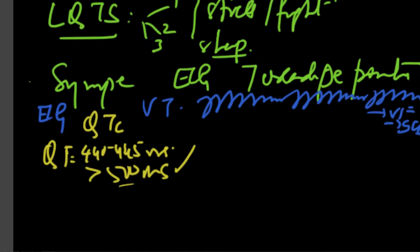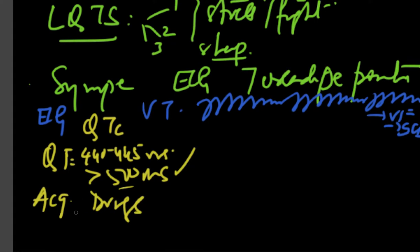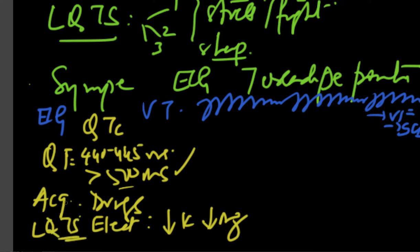These are congenital varieties. Then you have an acquired variety. Acquired variety results from drugs, medications, and then it also results from electrolyte abnormalities. What are the classic electrolyte abnormalities? It's a low potassium and a low magnesium. Either of these two, hypomagnesemia or hypokalemia, will result into Long QT Syndrome of an acquired variety.